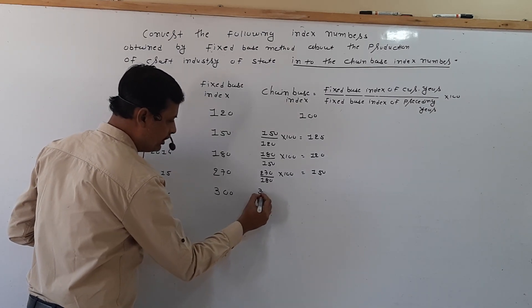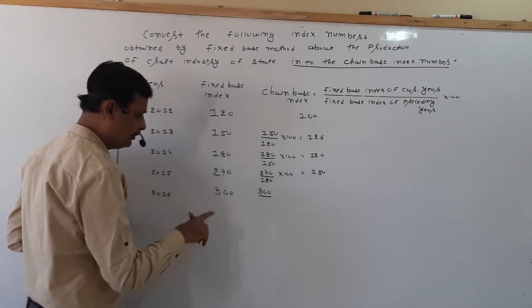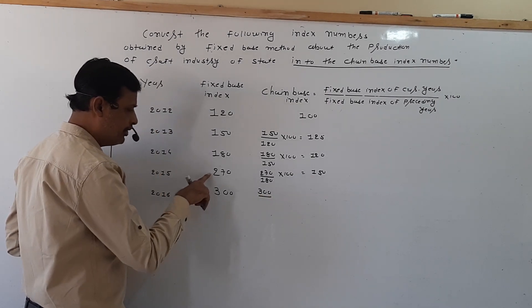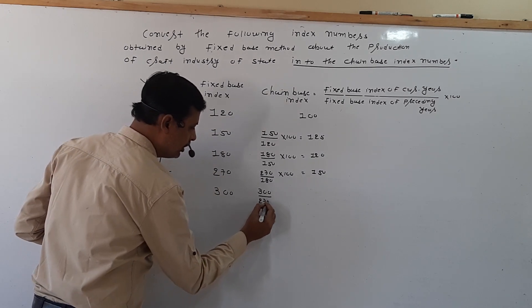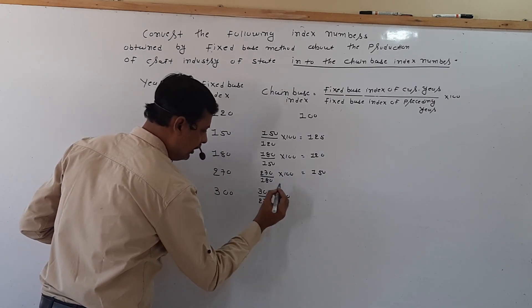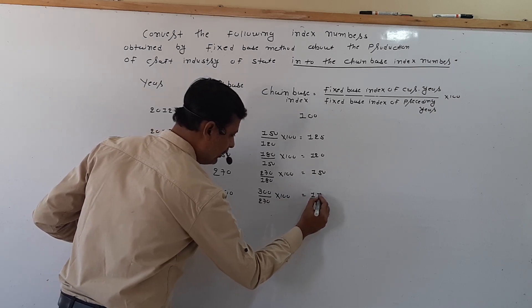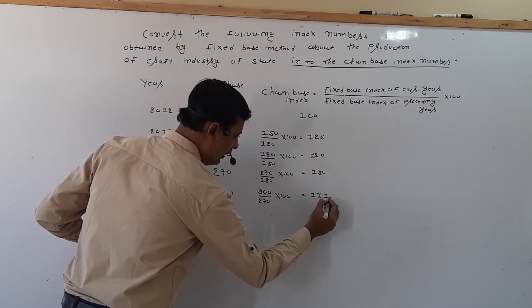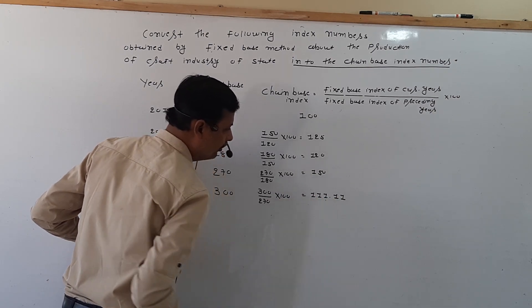The current year index is 300, and preceding year index is 270, into 100, that is 111.11.